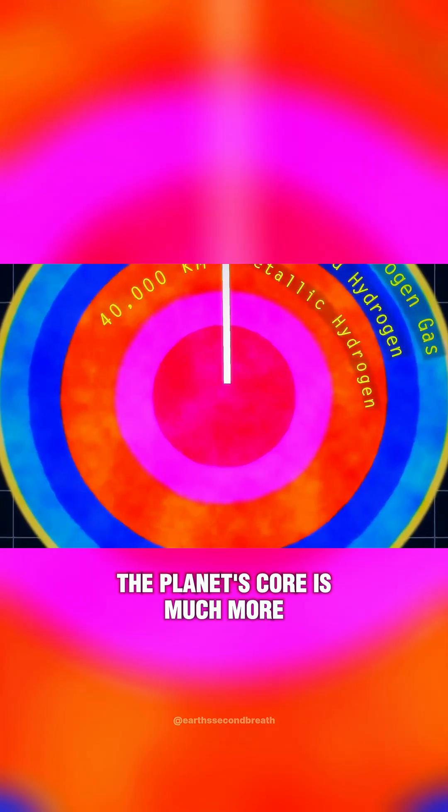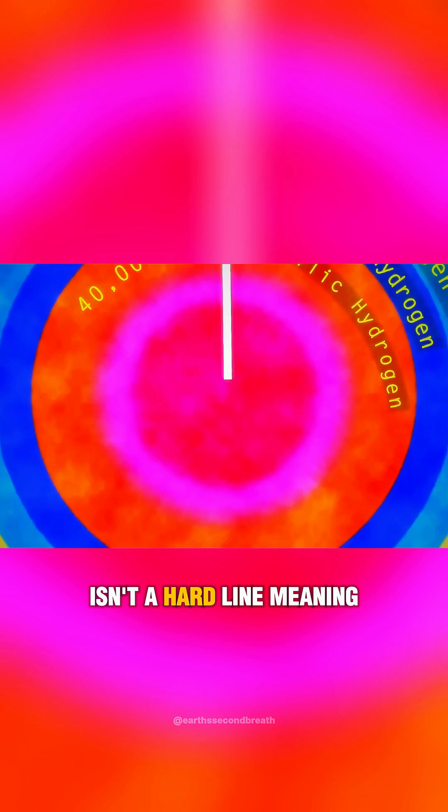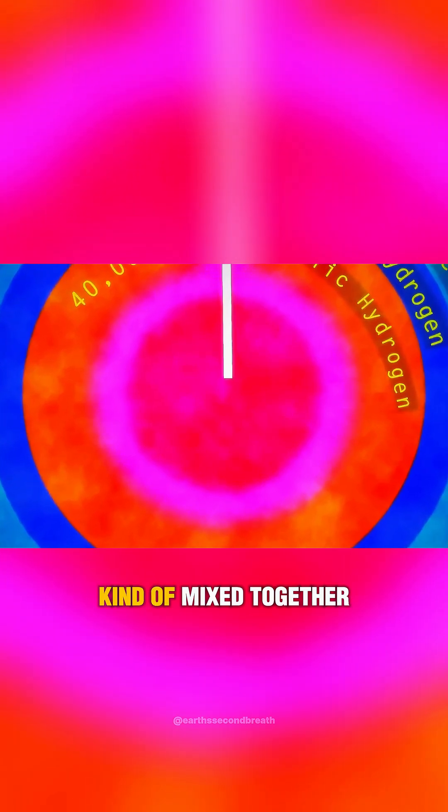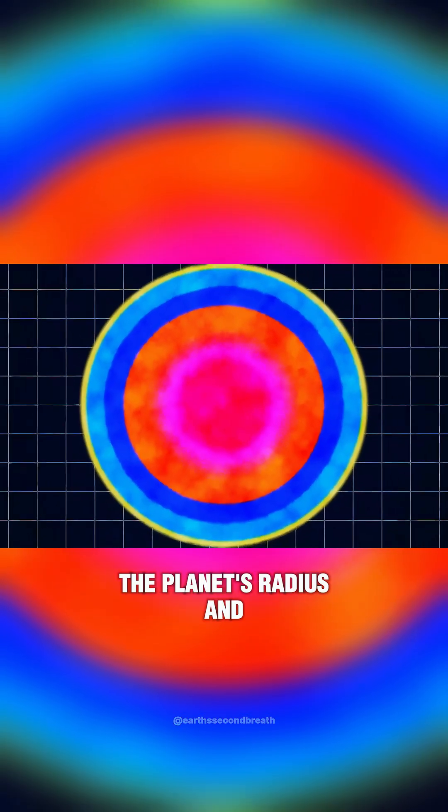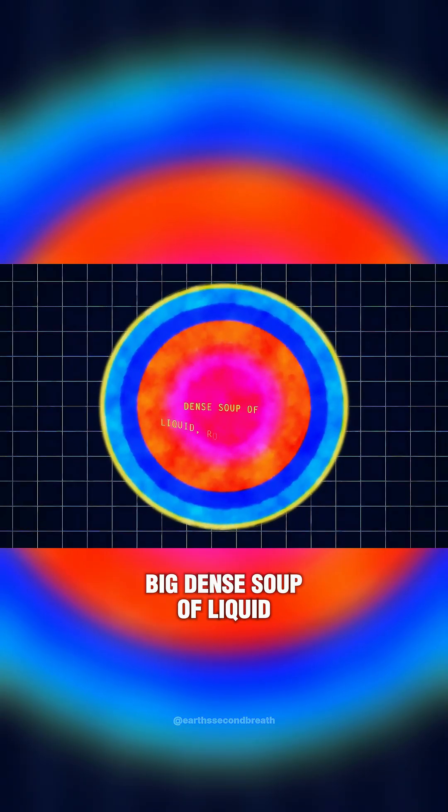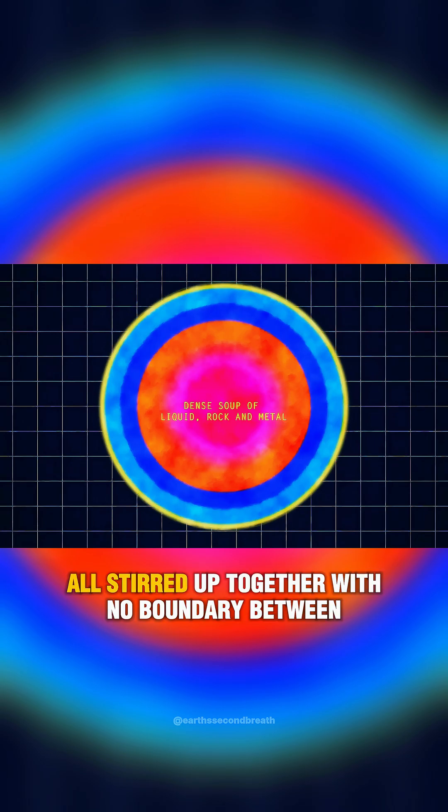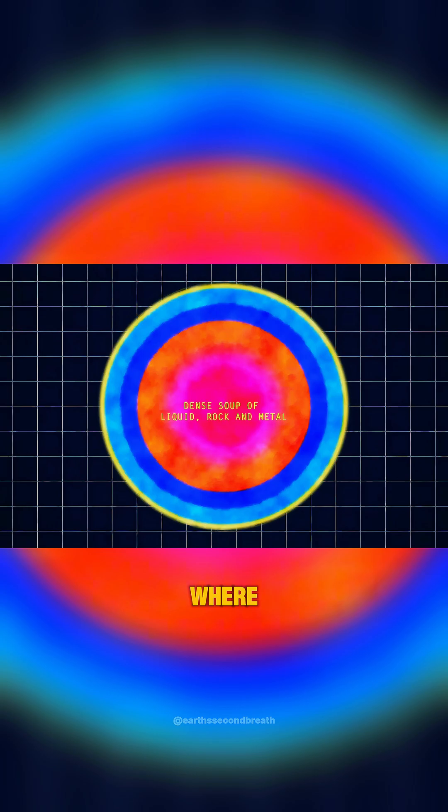but new research is uncovering that the planet's core is much more fuzzy, as in the transition between liquid metal and solid core isn't a hard line, meaning the two layers kind of mix together. The fuzzy core spans about half of the planet's radius, and scientists now believe that it's like a big, dense soup of liquid, rock, and metal, all stirred up together with no boundary between where one state of matter ends and another begins.